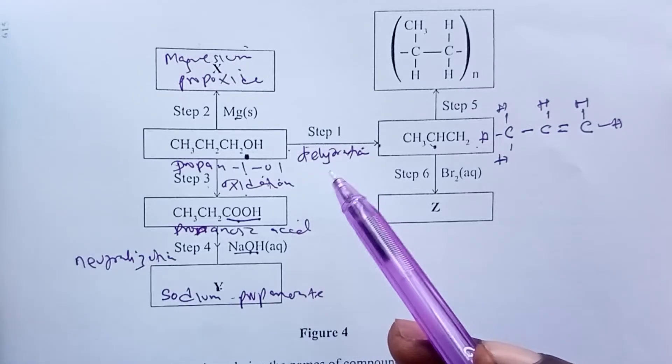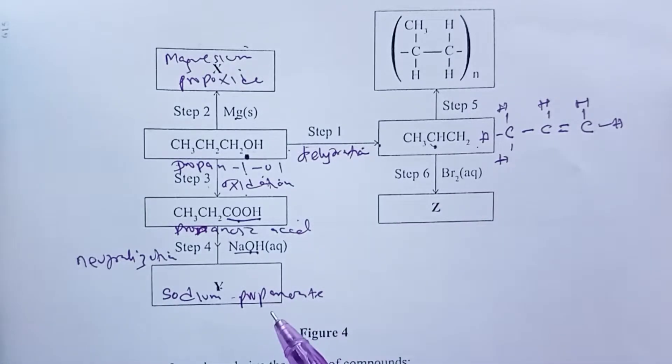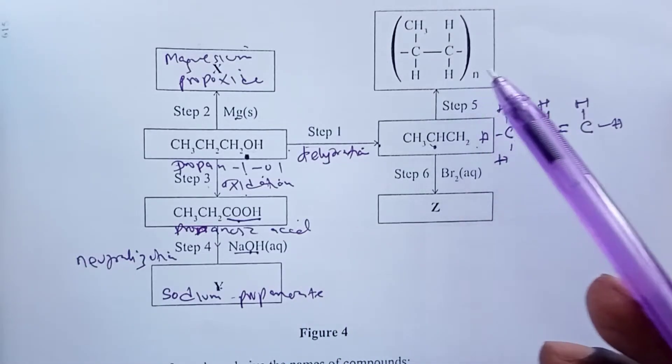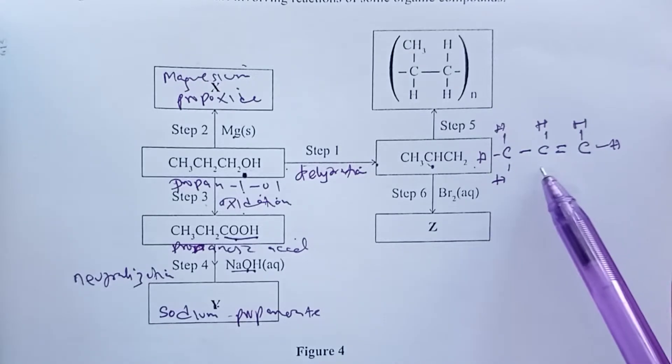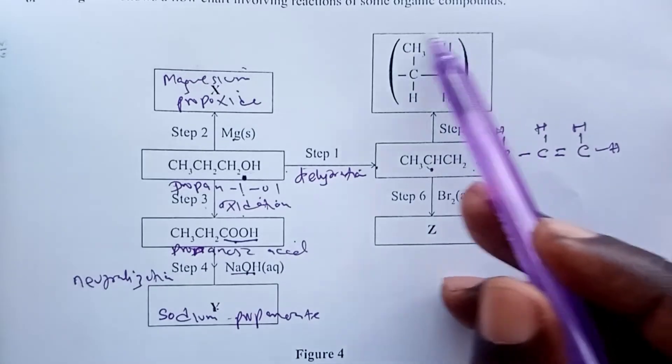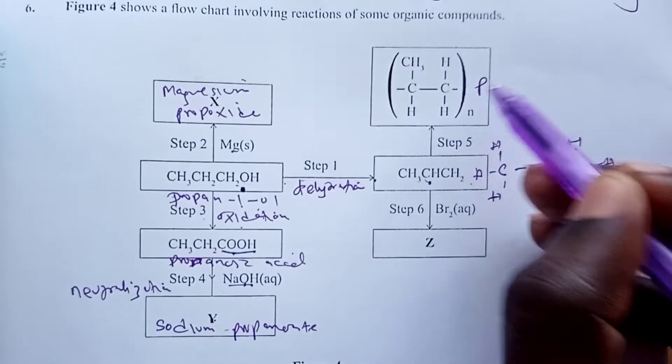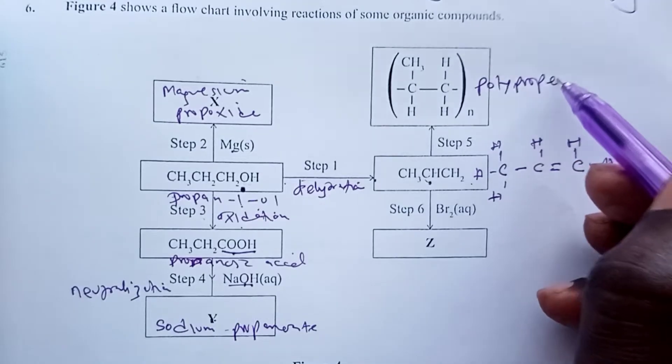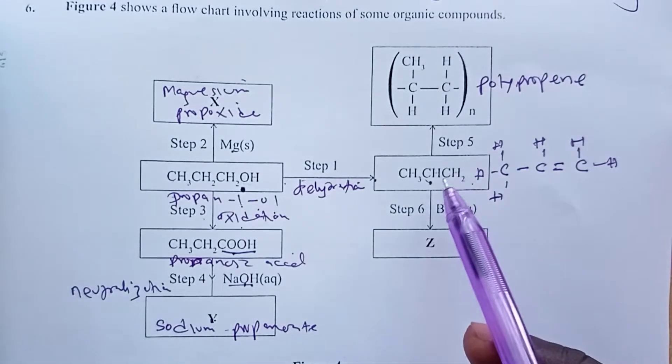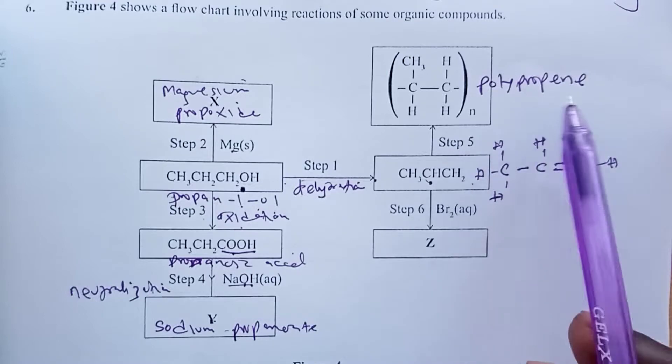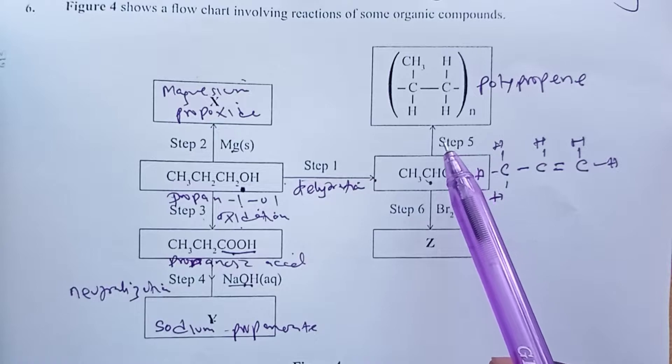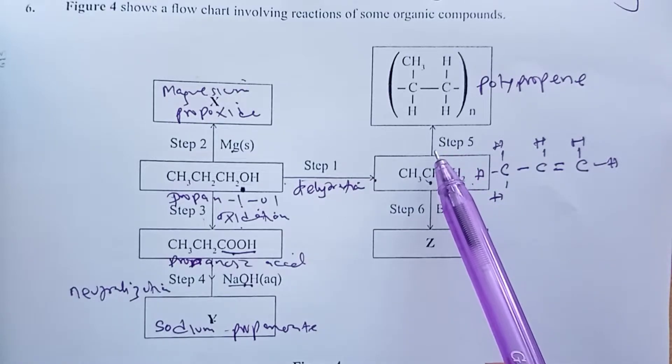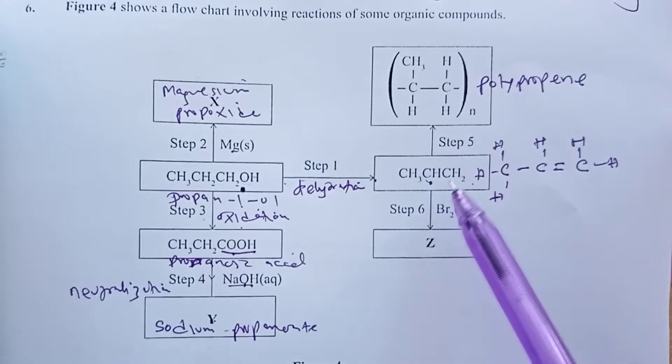In step five, we are doing polymerization on our prop-1-ene. And now this polymer is called polypropene. What do you need for step five? You need propene as the reagent, and you will need high temperature and also high pressure, or even a catalyst. All these we have learned in our earlier videos.